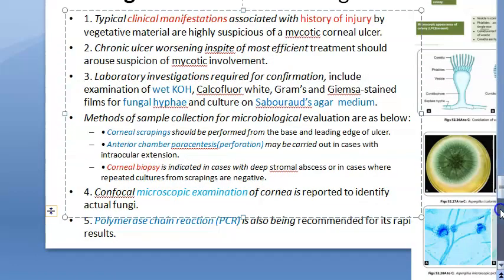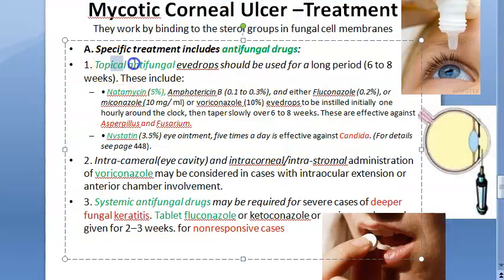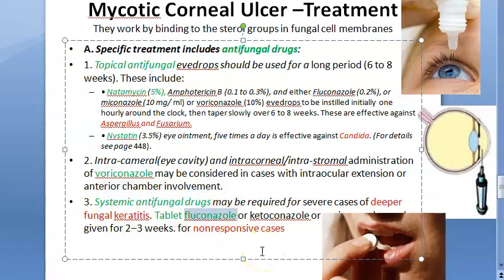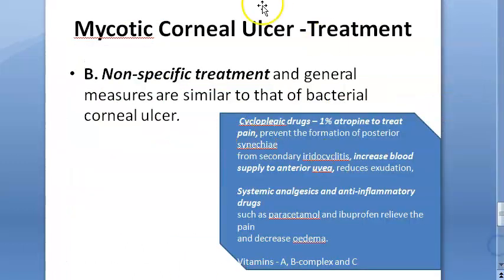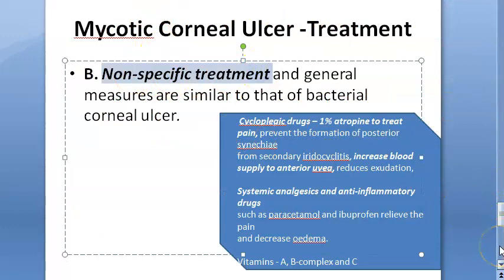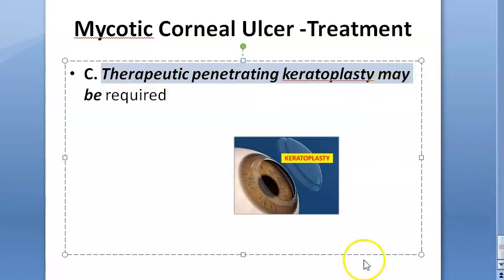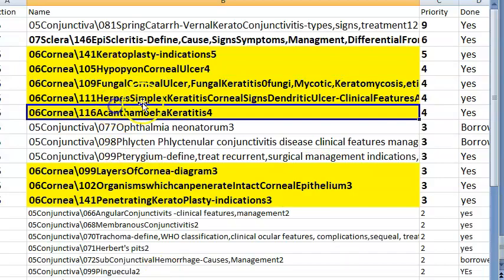Treatment of fungal keratitis: topical antifungals — natamycin for Aspergillus and Fusarium; nystatin for Candida; amphotericin B, fluconazole, voriconazole. Intracameral voriconazole and systemic antifungals (fluconazole, ketoconazole) for deeper infections. Non-specific treatment: cycloplegics, dark goggles, vitamin A and B and C. If completely damaged: corneal transplant.